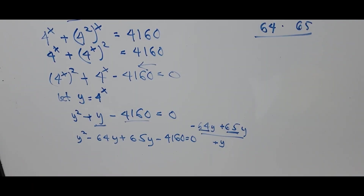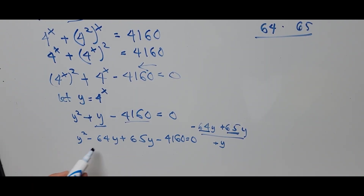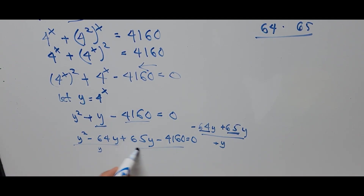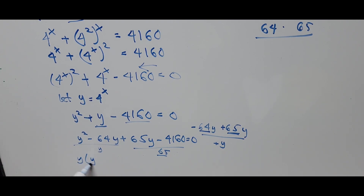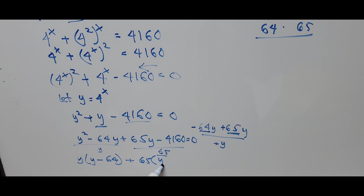Going back to our equation, we factor by grouping. The common factor on the first two terms is y, and on the last two terms is 65. Factoring y gives y times (y − 64), and factoring 65 gives 65 times (y − 64), which leaves 64.